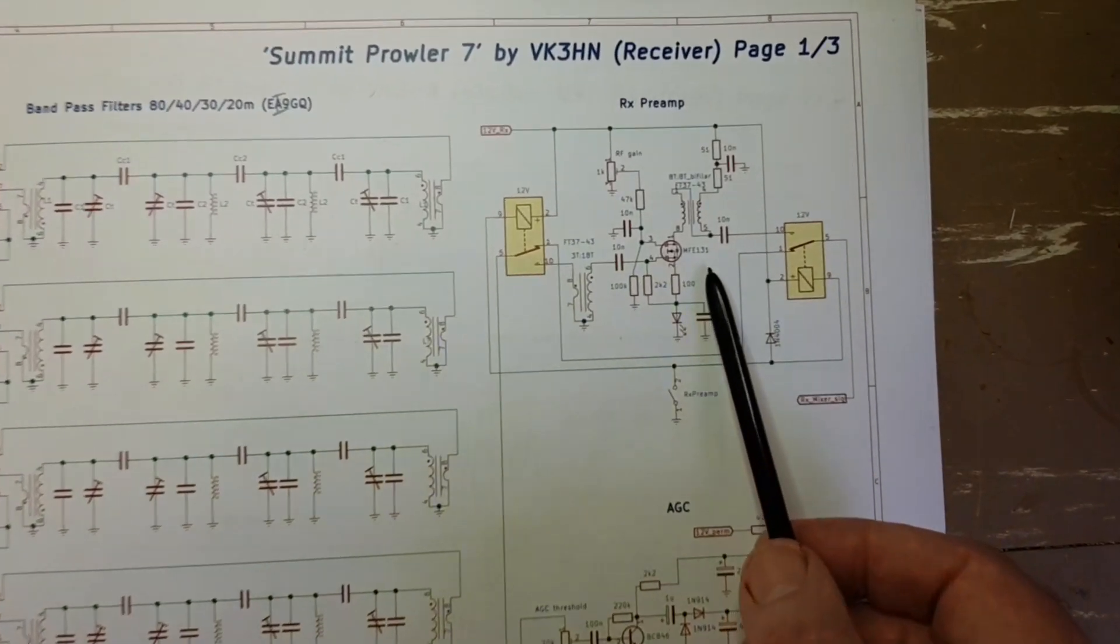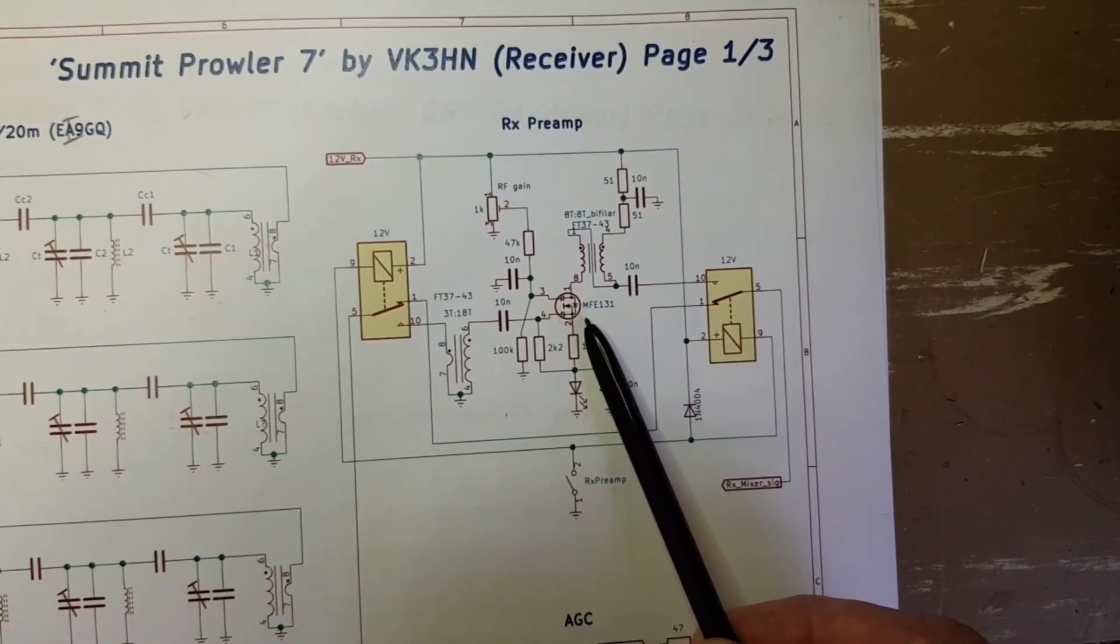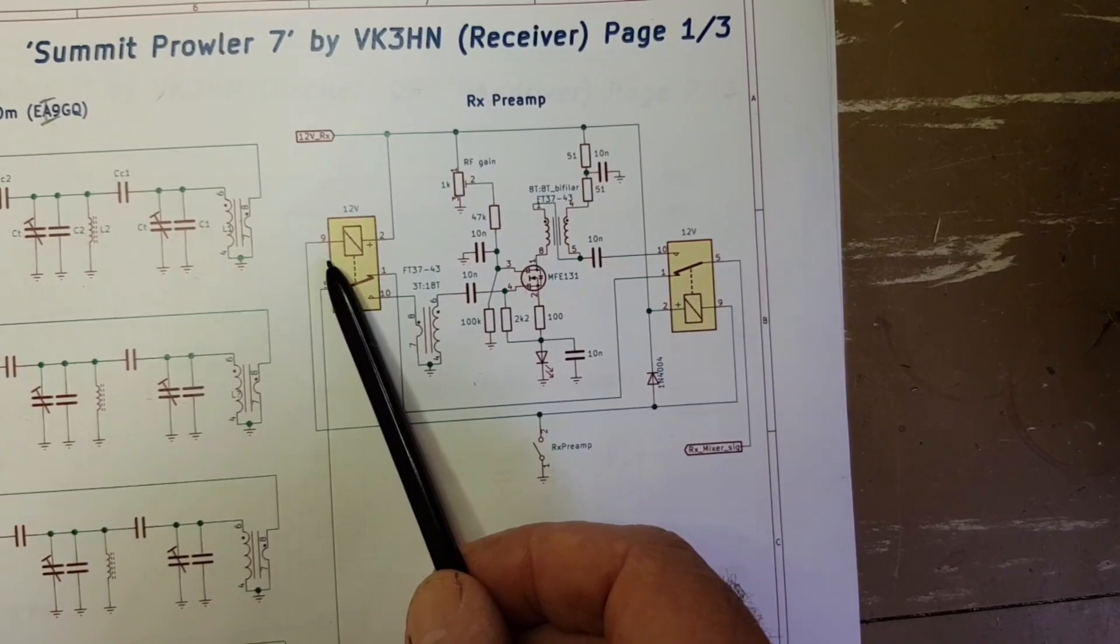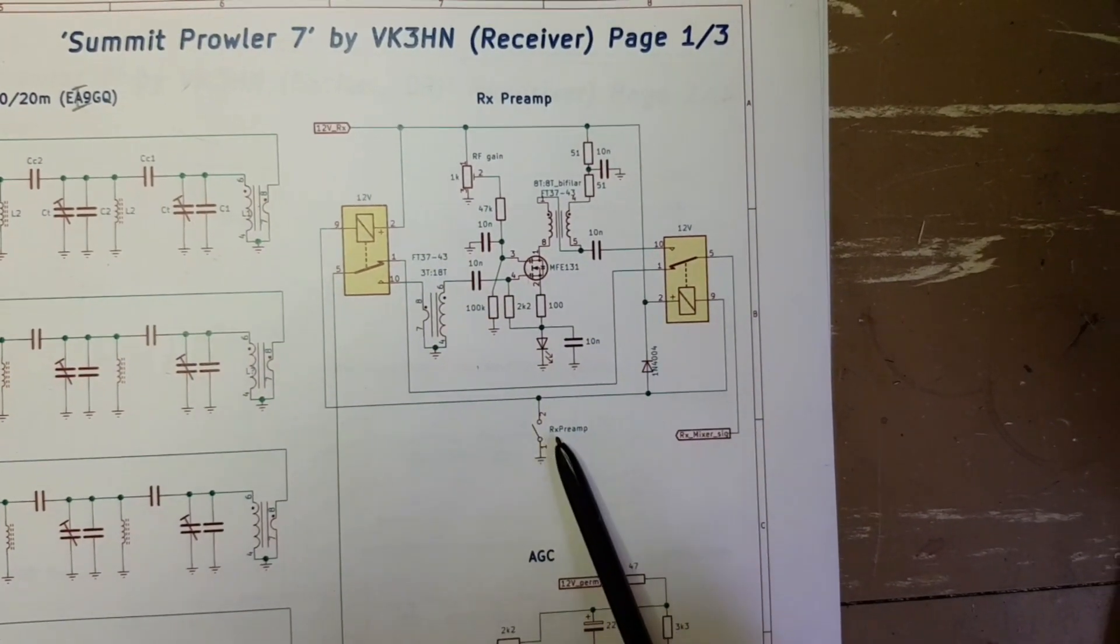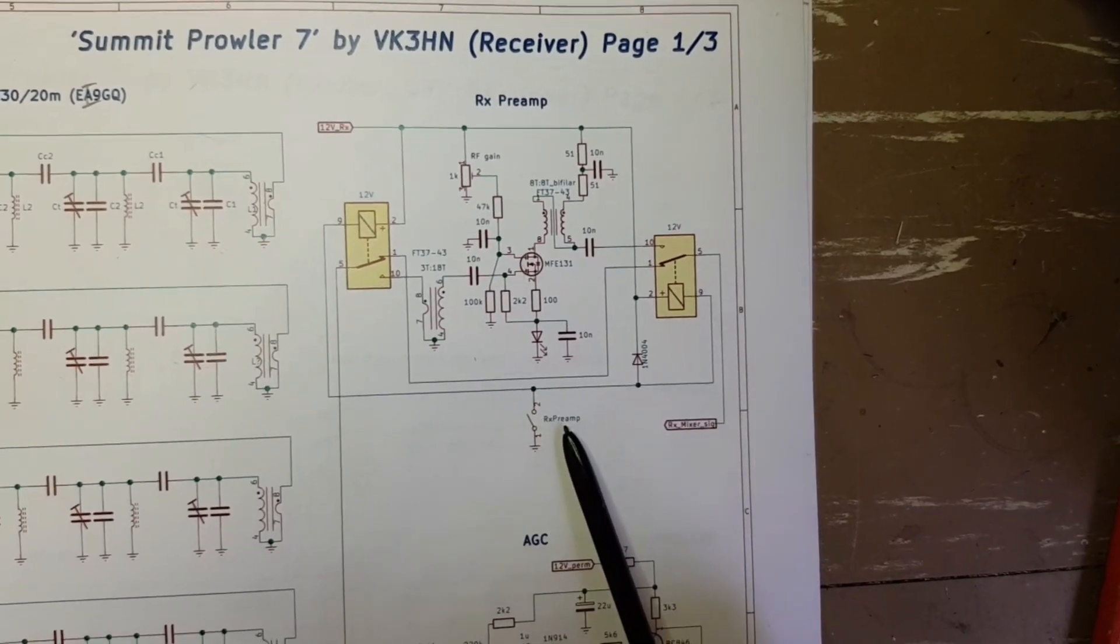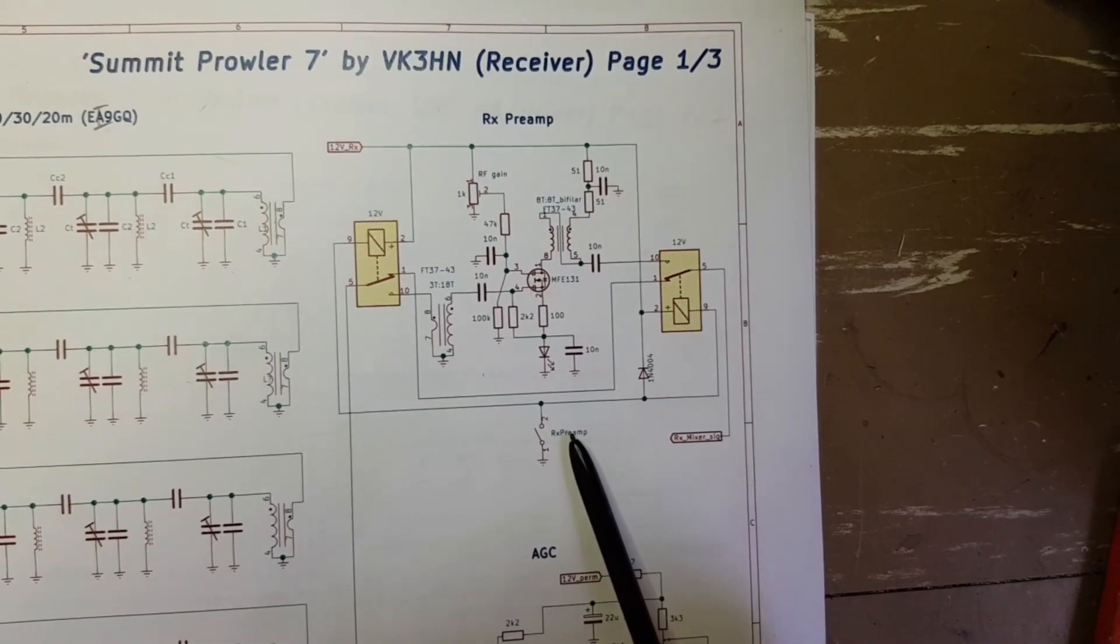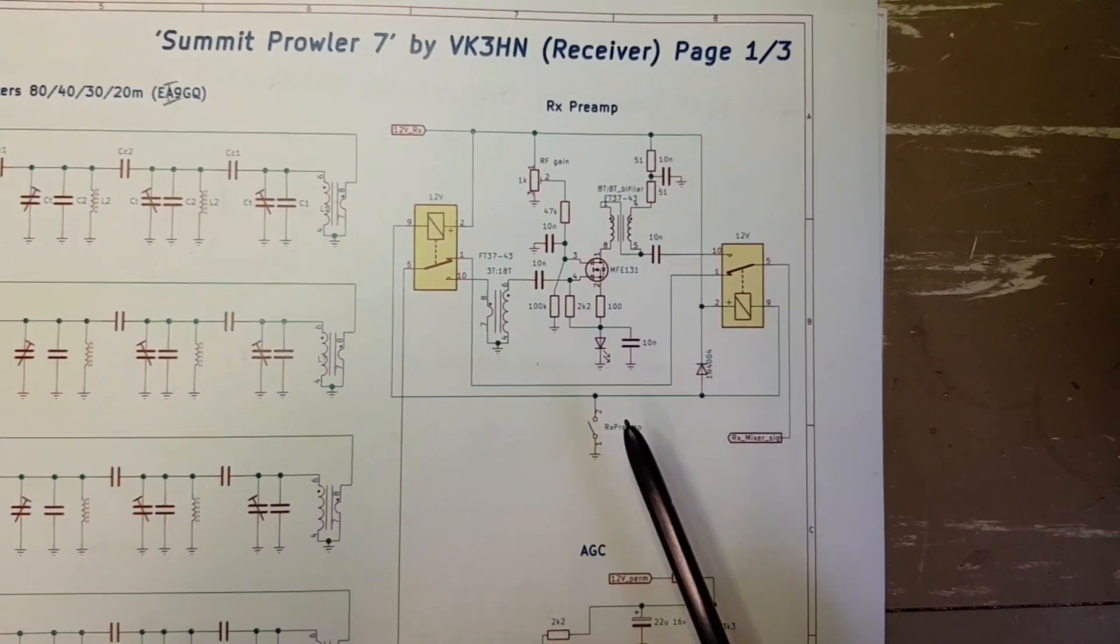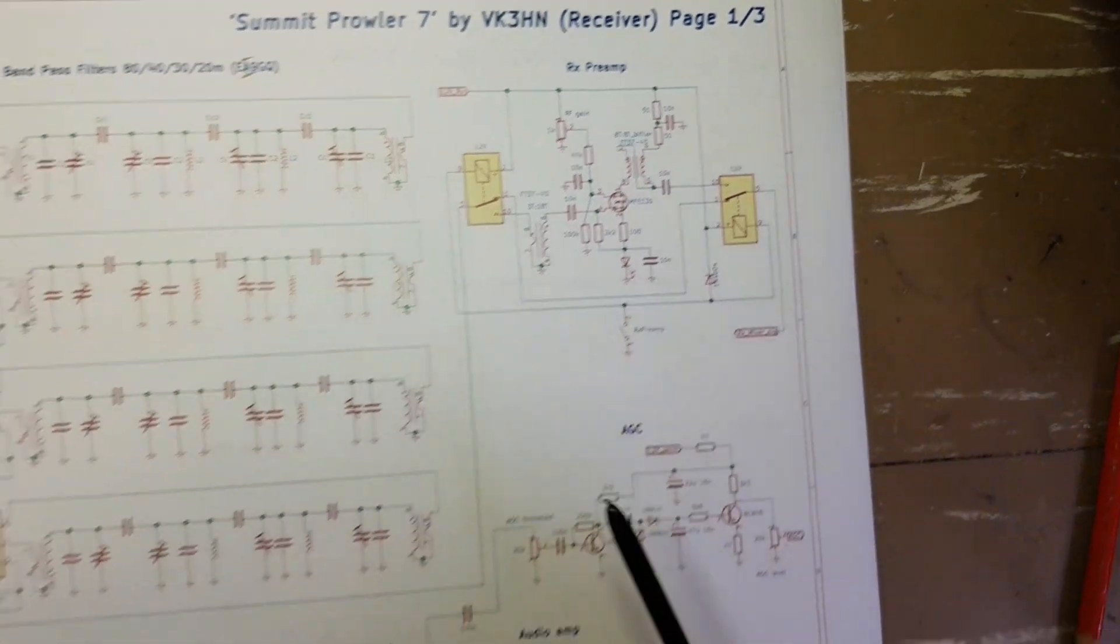After the bandpass filter there is a dual gate MOSFET RF stage, just a conventional stage, nothing special there, and it has a relay switch at either end so it can be switched in. If the receiver is connected to a resonant antenna, I use it on dipoles typically, you don't need this for 80, 40 or 30 meters, but for 20 meters or on a shortened or compromised antenna it does make a difference.